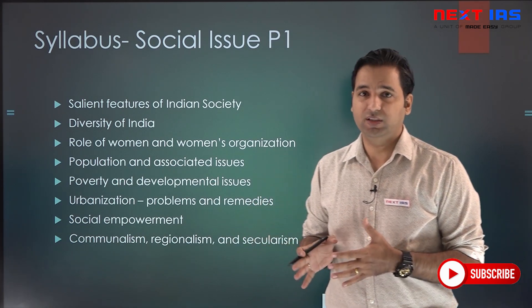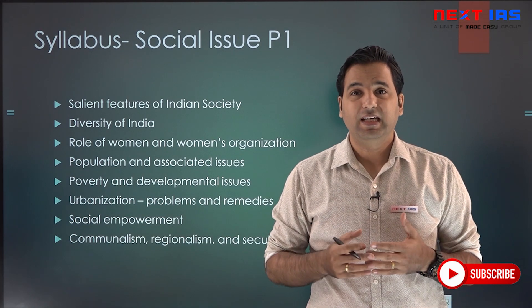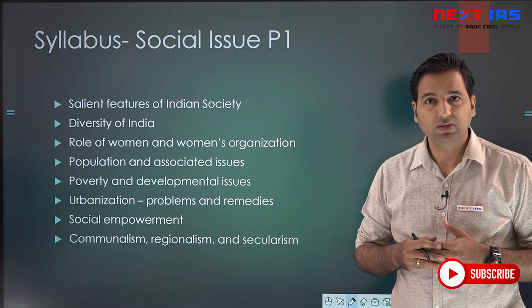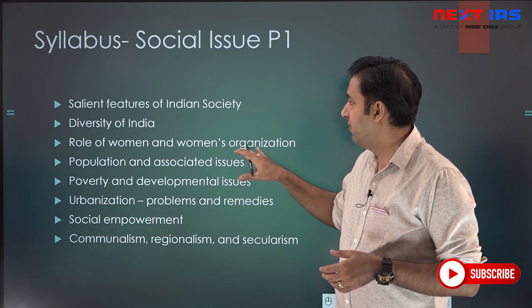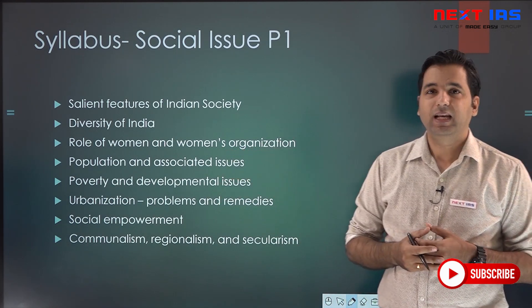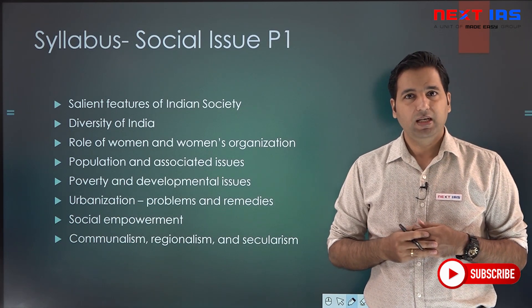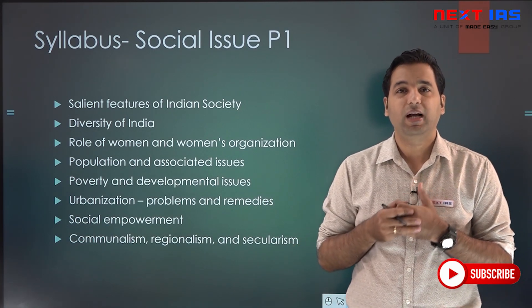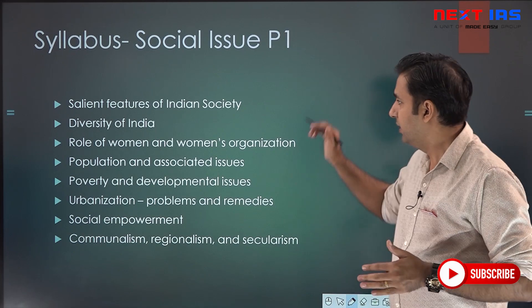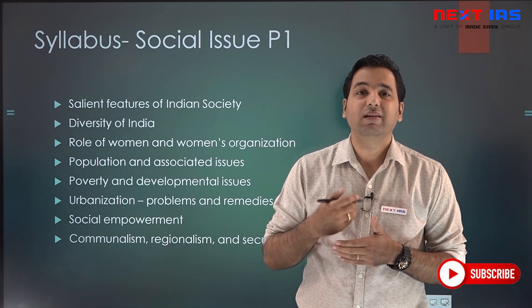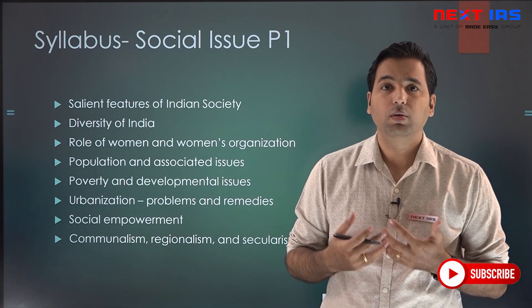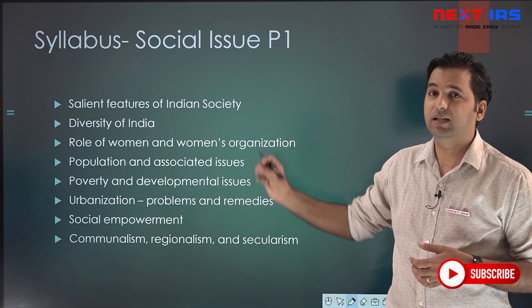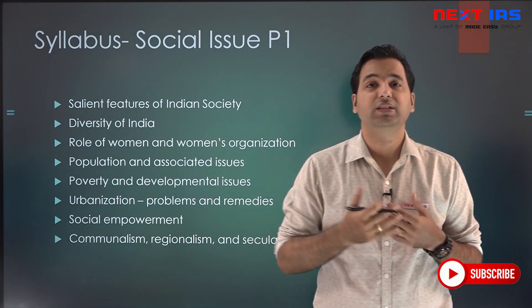Current affairs questions are dealt with in the social issues segment of Paper 1. The topics covered include: salient features of Indian society, diversity of India, role of women and women's organizations, population and associated issues, poverty and developmental issues, urbanization — problems and remedies — social empowerment, communalism, regionalism, and secularism. You need to go through various sources to gain clarity on the concepts and definitions of these syllabus topics.